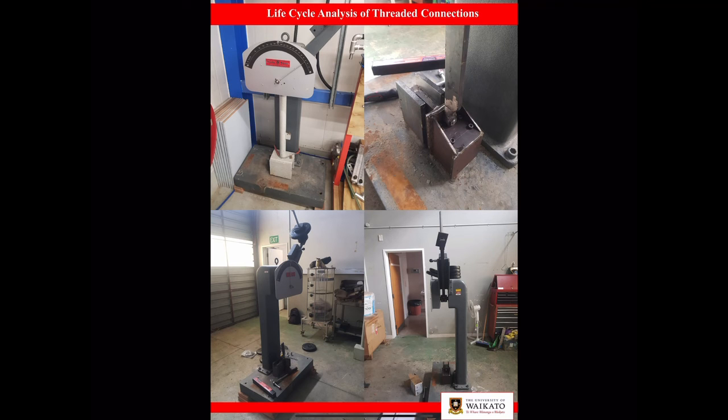The top left image shows the original Charpy equipment followed by the modifications made to the rig to be able to hold the simplified pivot stub.